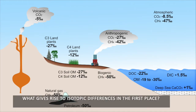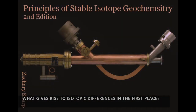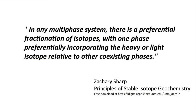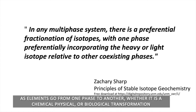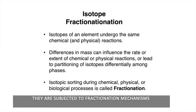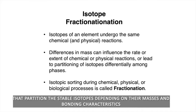What gives rise to isotopic differences in the first place? Zachary Sharp described it well in his book, Principles of Stable Isotope Geochemistry. In any multi-phase system, there is a preferential fractionation of isotopes, with one phase preferentially incorporating the heavy or light isotope relative to other coexisting phases. As elements go from one phase to another, whether it is a chemical, physical, or biological transformation, they are subjected to fractionation mechanisms that partition the stable isotopes depending on their masses and bonding characteristics.